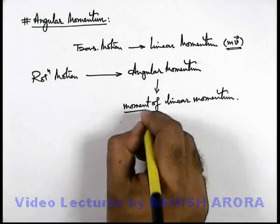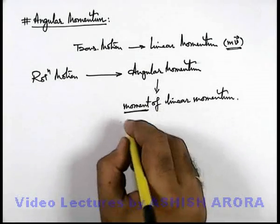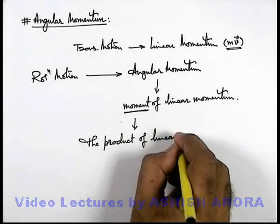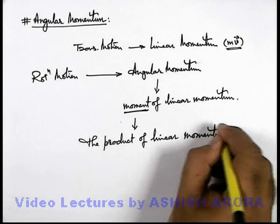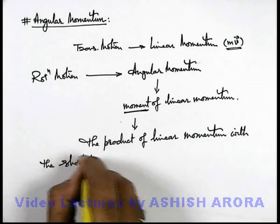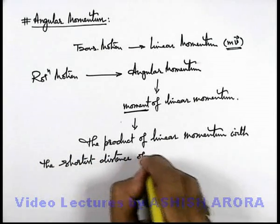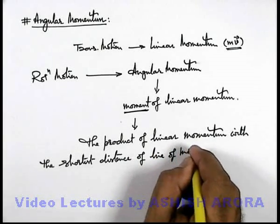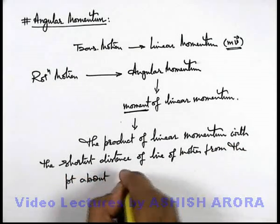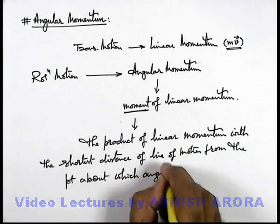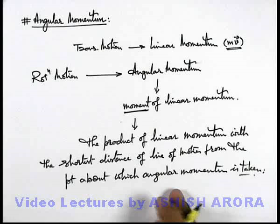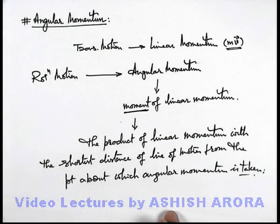The moment of linear momentum can be given as the product of linear momentum with the shortest distance of the line of motion from the point about which angular momentum is taken. This will be more clear with the help of an illustrative example.